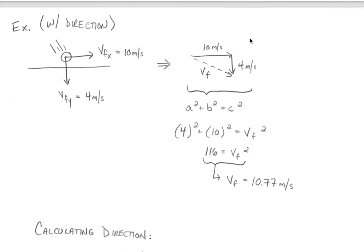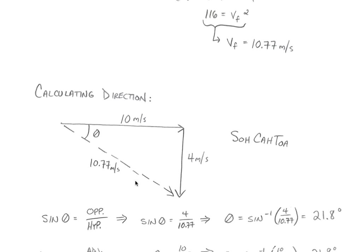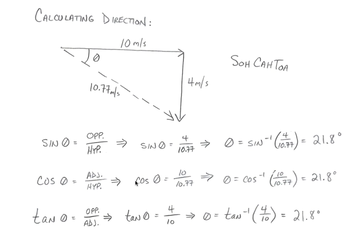To recap: when you have the final conditions of your projectile, you'll have x and y components. First, combine those using Pythagorean theorem to get the magnitude of the actual final velocity — not x, not y, but the combination of both. To find direction, use the same right triangle but look at the angle: use SOHCAHTOA with sine, cosine, or tangent depending on which sides you're given, and that will tell you the angle the final velocity is acting at.